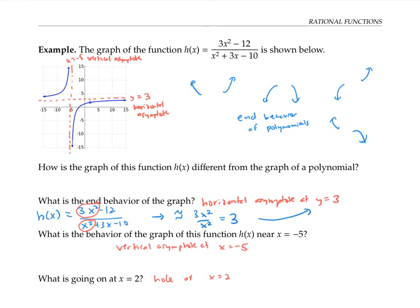Now, vertical asymptotes tend to occur where the denominator of our function is zero. That's because the function doesn't exist when our denominator is zero. And when we get close to that place where our denominator is zero, we're going to be dividing by tiny, tiny numbers, which will make our y values really big in magnitude. So to check where our denominator is zero, let's factor our function — I'm going to go ahead and factor both the numerator and the denominator.